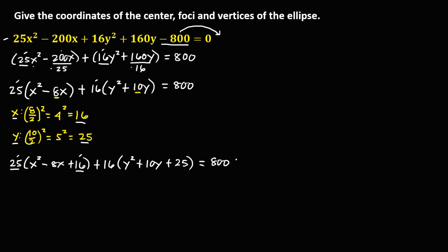So we add 25 times 16 to the right side. For y, since we added 25 but we have the coefficient 16 outside, we need to multiply those two numbers and add to the right side as well, so plus 16 times 25. Then we simplify by applying factoring.